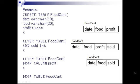Now I am going to alter the table by introducing a sold field. ALTER TABLE food_cart ADD sold INT. Now the table has four fields: date, food, profit, and sold. Next, ALTER TABLE food_cart DROP COLUMN profit. Now the table has three fields: date, food, and sold. Finally, DROP TABLE food_cart will delete the entire table.